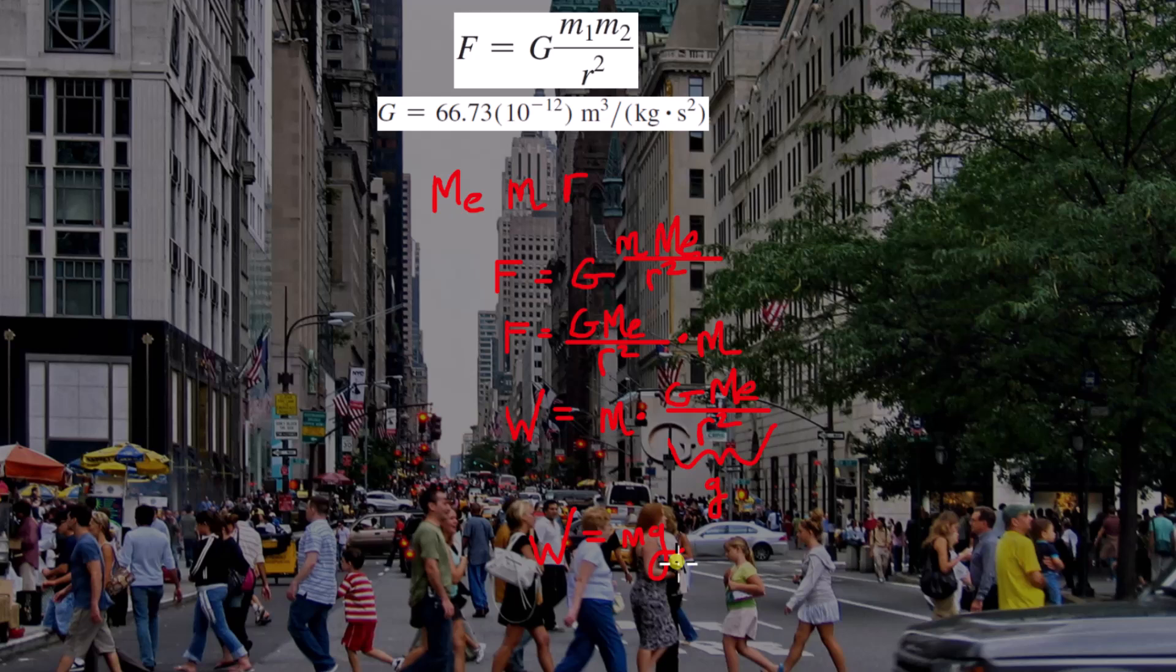Now, what's interesting to note about this, let's say we're at sea level. We're dealing with objects strictly at the same, this R distance is the same. So, this is truly a constant. Well, what's a constant?